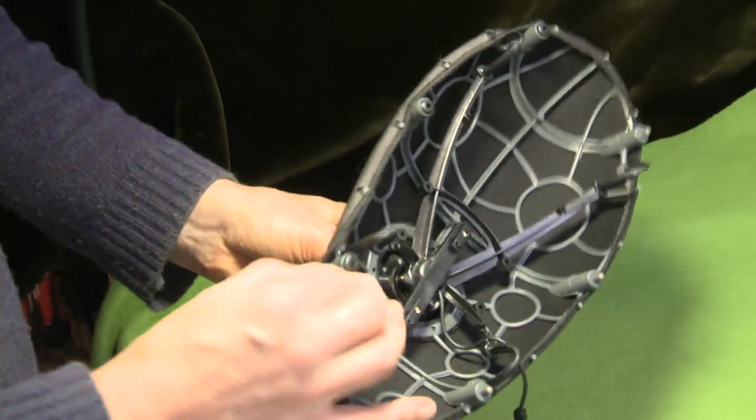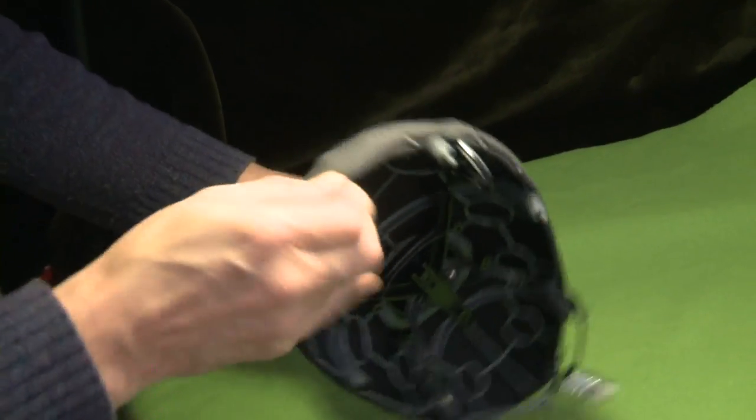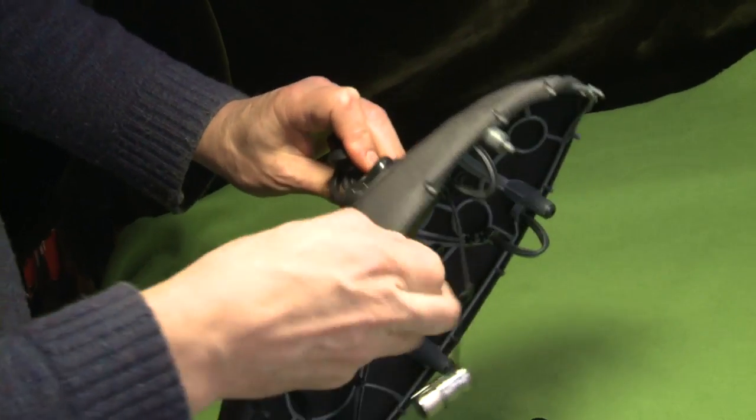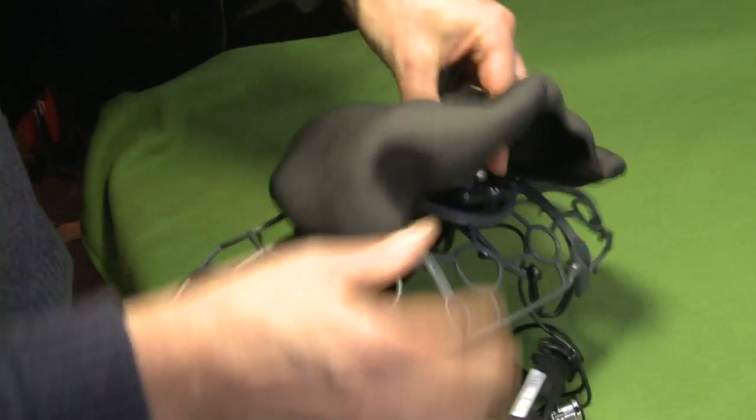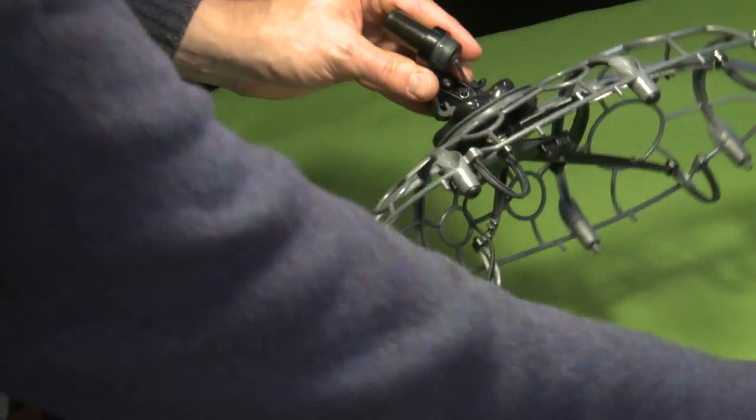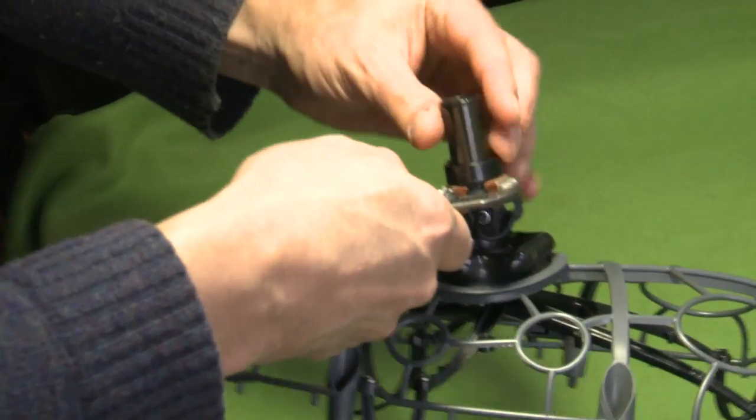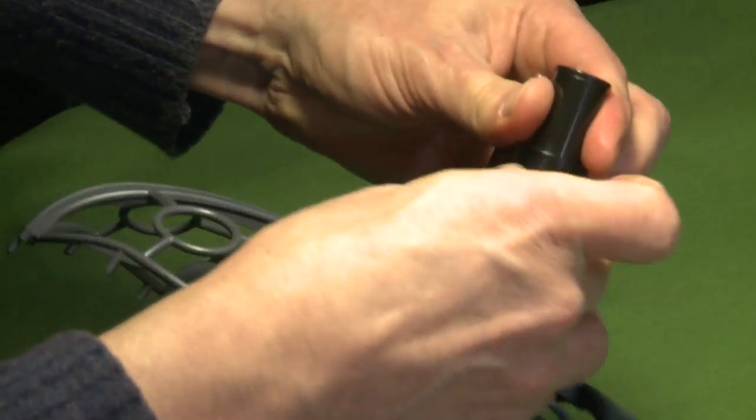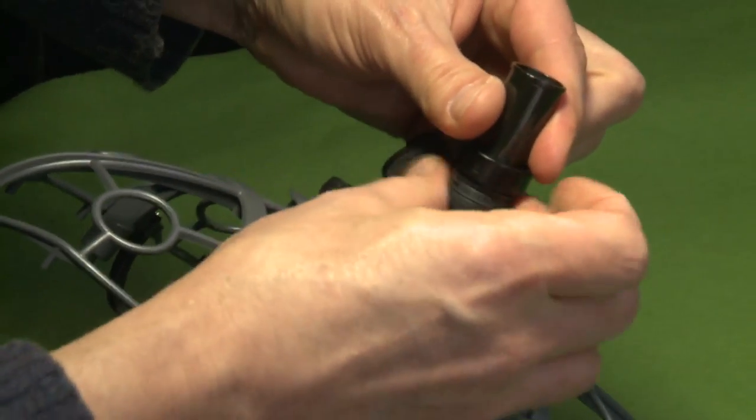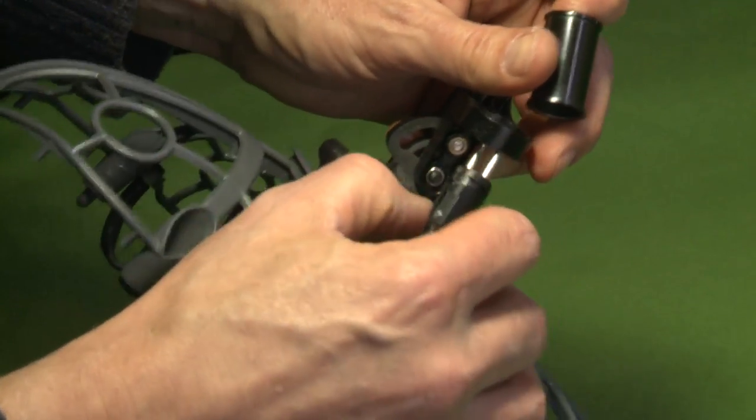Then first you just take that out very simply. First thing is to dismantle the XLR. Always turn the cap, never the body, like that. Then take care of the cable, that's it.